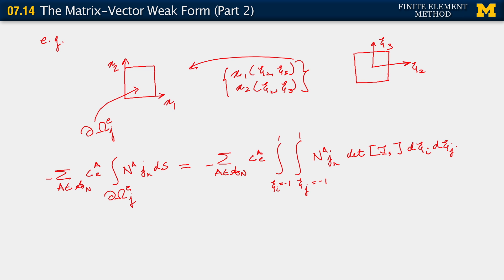Now, when we carry this through, what we get is the following: we can abandon the explicit sum over the local degrees of freedom A, and instead go to a vector which now consists of Ca1e, Ca2e, up to Ca4e. Because any face will have four nodes, so four degrees of freedom in this case.